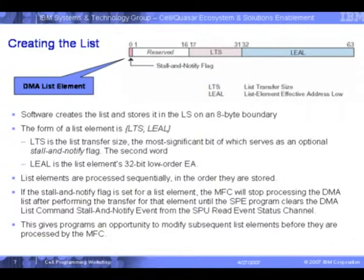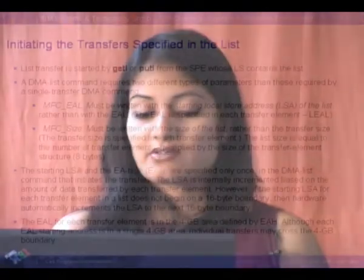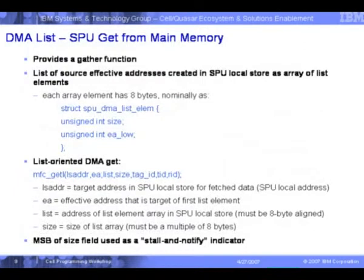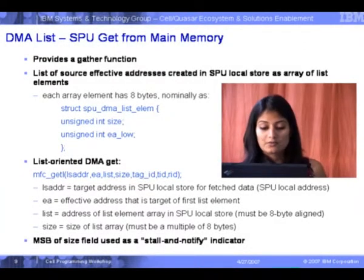Sometimes the DMA list might need to say, after this list element is fetched, just stop — to notify the SPU that, say, 32 or 48 kilobytes of data have been fetched, because the SPU needs to process that data before continuing with the remaining list transfers. You specify the effective address low and the size of the list. The structure definition looks like: struct DMA list element, with the size and the address fields.